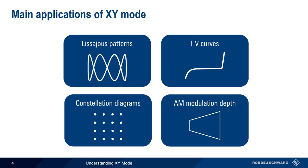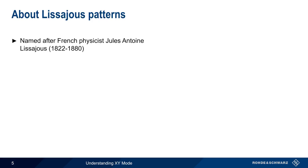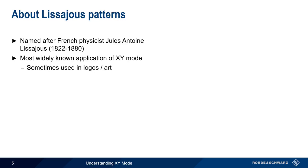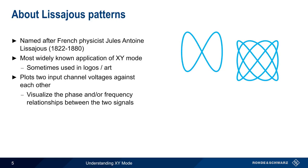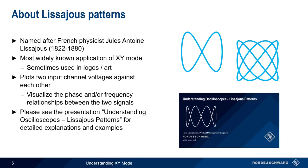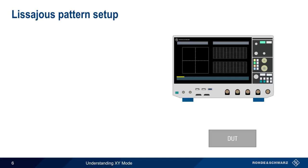We'll start with Lissajous patterns or curves, which are named after the 19th century French physicist Jules-Antoine Lissajous. Lissajous patterns are the most widely known application of XY mode, and these patterns are sometimes even used as logos or in popular art. Lissajous patterns are created by plotting the two input channel voltages against each other, and the frequency or phase relationship between these two signals can then be visualized from the resulting patterns. Please see the separate presentation, Understanding Oscilloscopes: Lissajous Patterns, for more detailed explanations and examples.